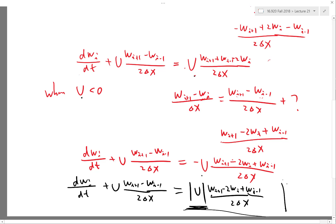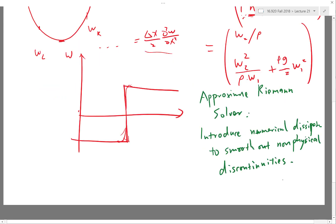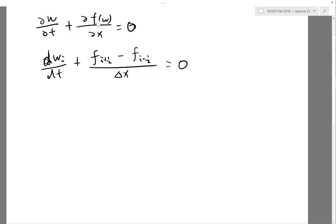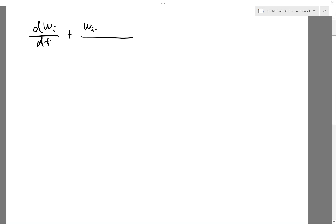Let's write down the same scheme as we derived before: dw/dt plus a central difference scheme is equal to, we have a |u| here, absolute value of u over 2 times the second derivative.